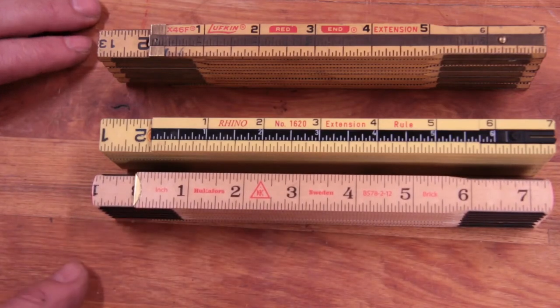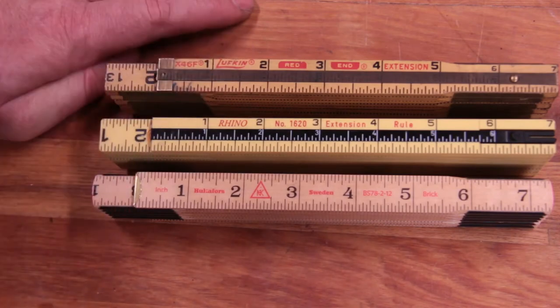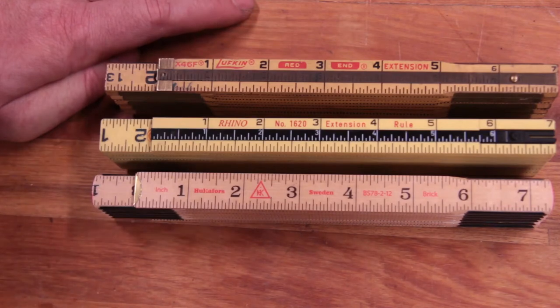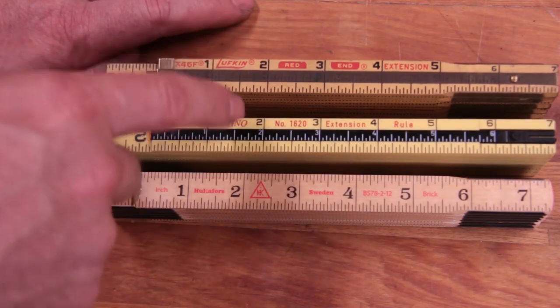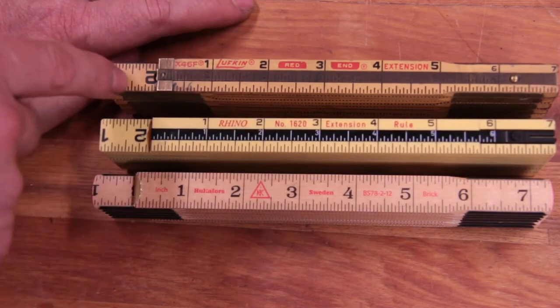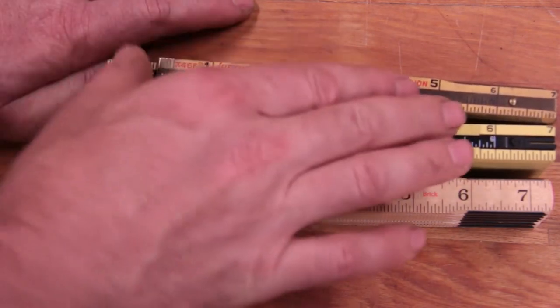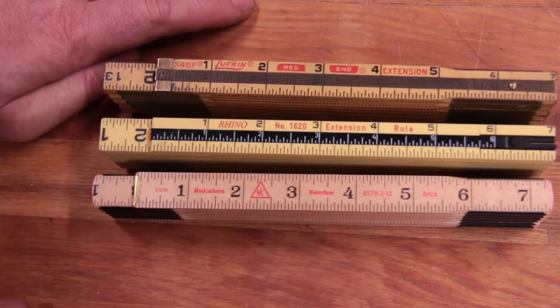But yeah, this is definitely a good option if you like a folding rule. Definitely way better than the new Lufkin ones with all the sloppy joints and poor build quality. And I'd say it's comparable to these two as far as accuracy and build quality. And these old used Lufkins are going to get harder and harder to find off of eBay. That's a bit of a gamble buying something used.